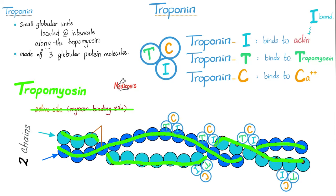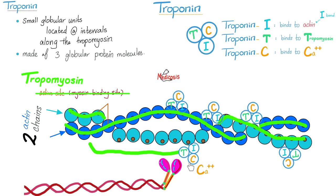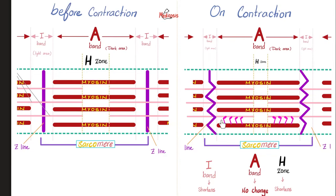Calcium is the hero of contraction. Calcium comes and binds to troponin C. Then troponin T takes that tropomyosin and peels it off the actin, removing it and exposing the active sites on the actin, so that myosin can come and bind those active sites — and then muscle contraction happens. Calcium binds troponin C, troponin T removes tropomyosin, active site is exposed, myosin binds actin. This will not happen until calcium comes from its prison.